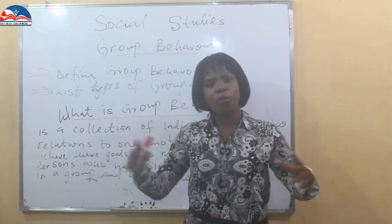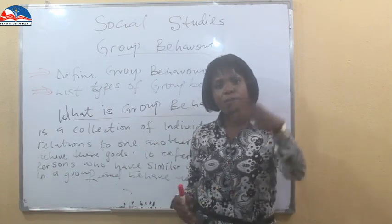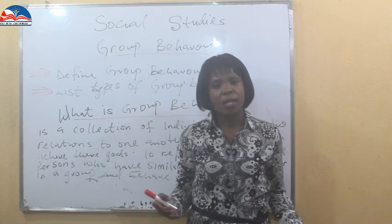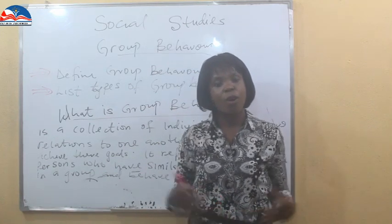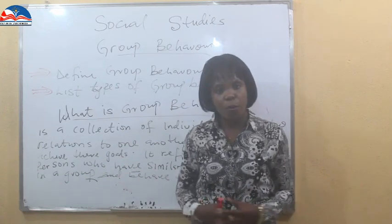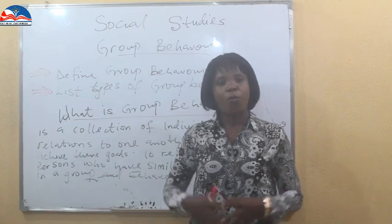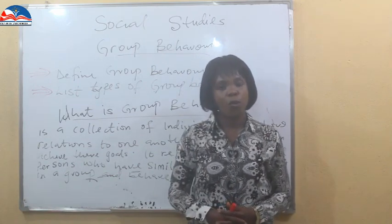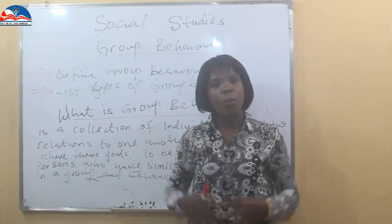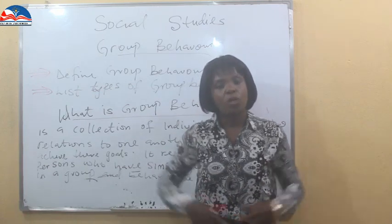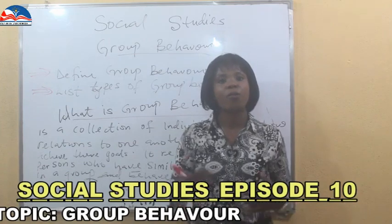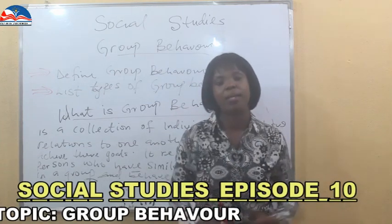When you see a group of individuals achieving a particular goal, that means they are in the group for a particular reason. Let's say an age grade — they are a group of people formed maybe for the maintenance of the community. So all their goals and objectives is to maintain their community. Any group that is created has to be created for a purpose and a goal in mind.